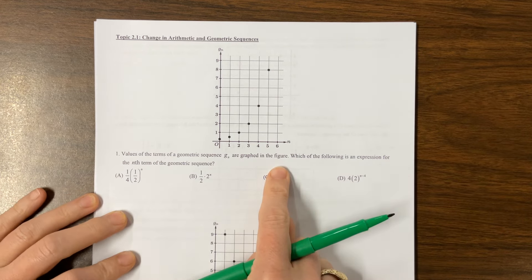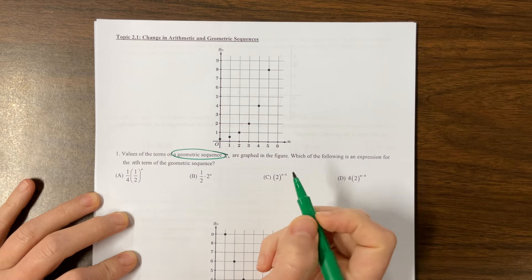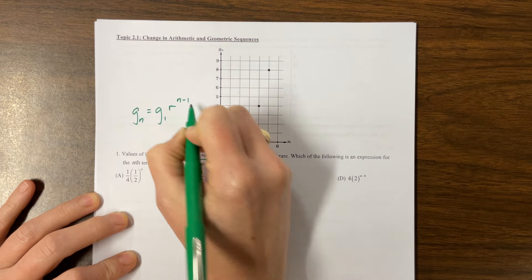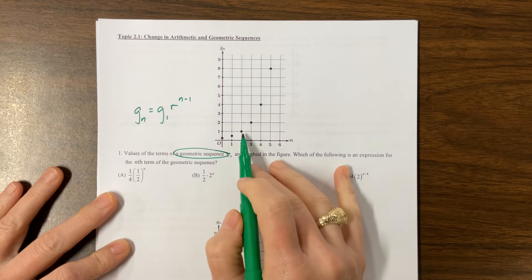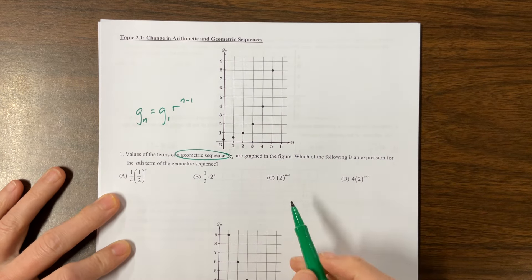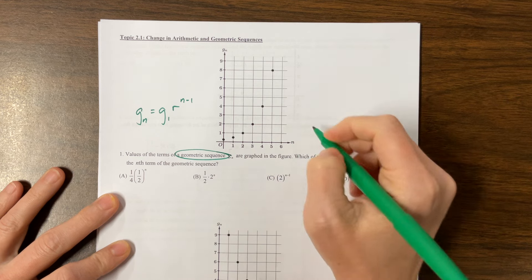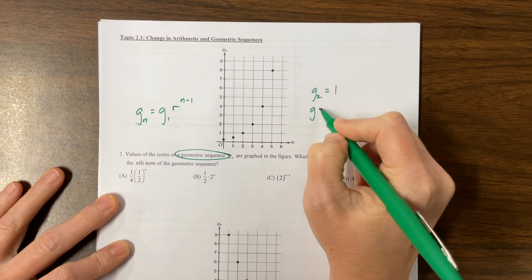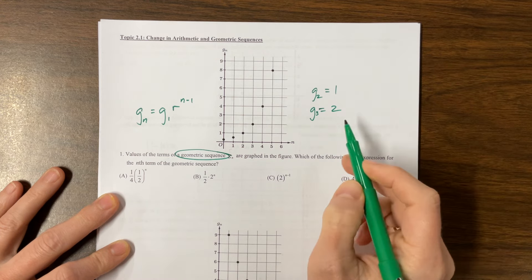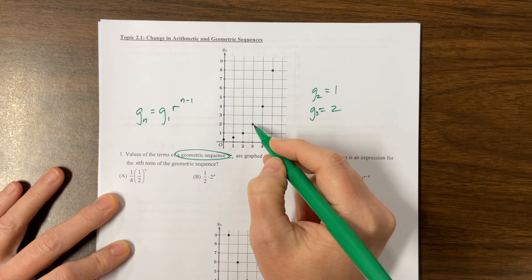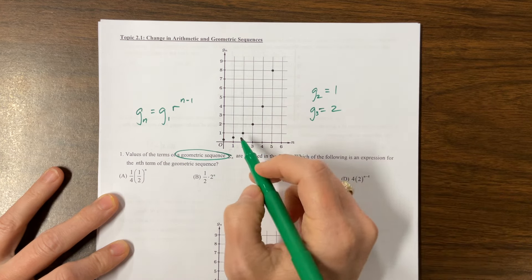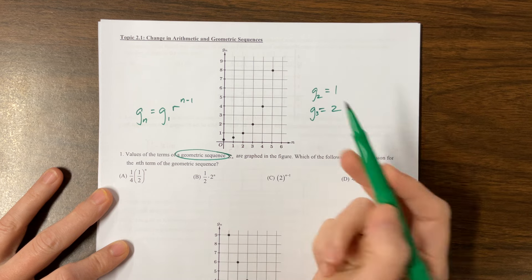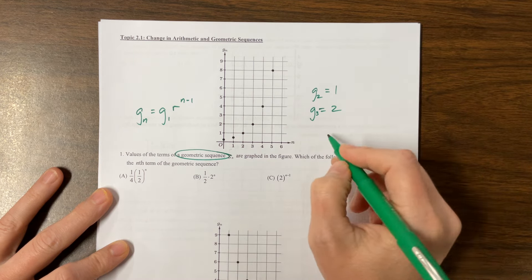So on this first one, they're telling us they're graphing terms of a geometric sequence. Keep in mind, a geometric sequence is where you have a common ratio. So you might say like g sub n is equal to g sub 1 times r to the n minus 1 is one of your standard forms. So it's what you're multiplying by. So what do I see in this particular problem? I see that g sub 2 is equal to 1. I see that g sub 3 is equal to 2. It looks like I made one fourth, one half, one, two, four, and eight.